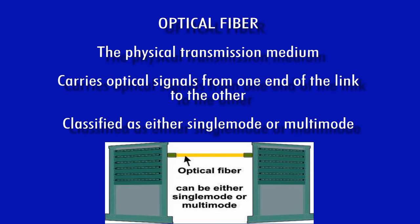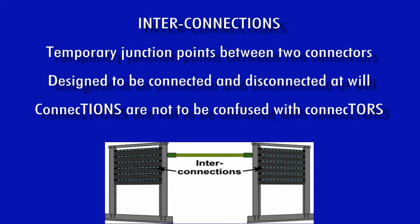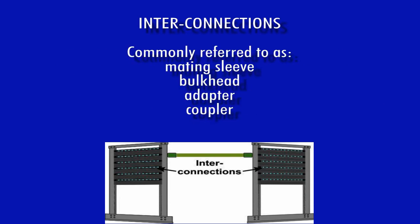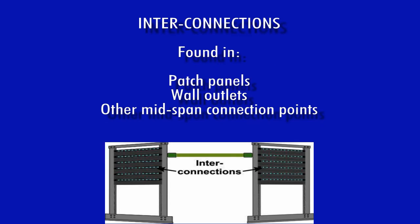The components considered as part of a properly designed fiber link include the following. Optical fiber is the actual communications medium that carries optical signals from one end to the other; optical fibers are classified as either single mode or some type of multi-mode. Interconnections are temporary junction points between two connectors — temporary because they are designed to be disconnected and reconnected at will. Common names for interconnections are mating sleeve, bulkhead, adapter, and coupler. Interconnections can be found in patch panels, wall outlets, or mid-span when using a centralized optical fiber link design.